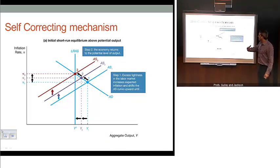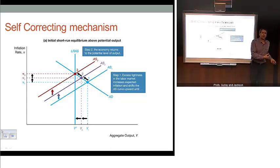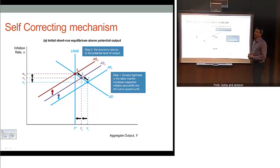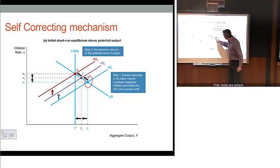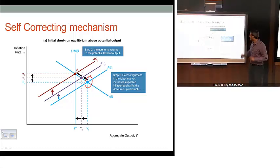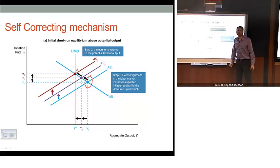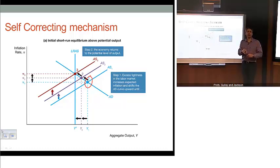The basic mechanics of how all of these pieces work really comes down to thinking about this self-correcting mechanism. Given some unspecified shocks to the economy, how do we get back to our long-run equilibrium? Suppose we're sitting at equilibrium point one — it doesn't matter how we get there, but there's some shock to the economy which pushes us to this equilibrium at point one. Point one is a short-run equilibrium, but it's not a long-run equilibrium. The question is how do we get to that long-run equilibrium.